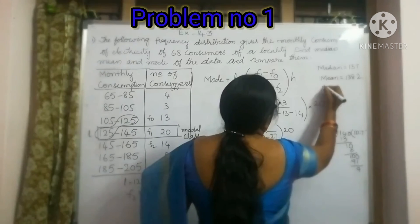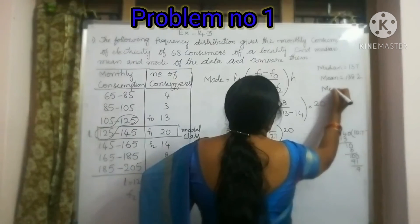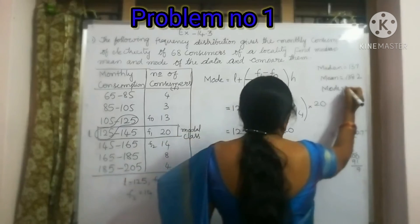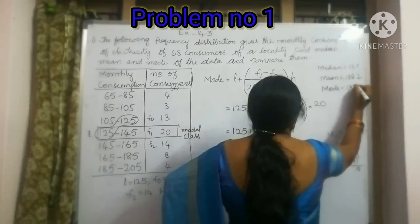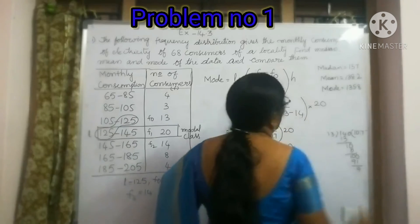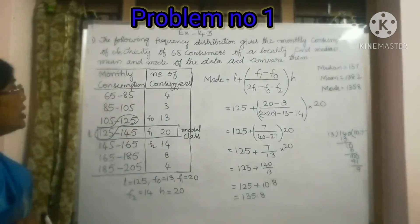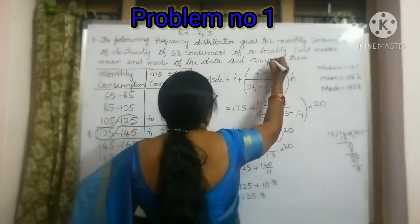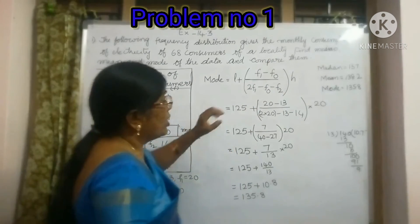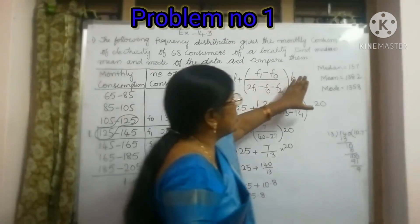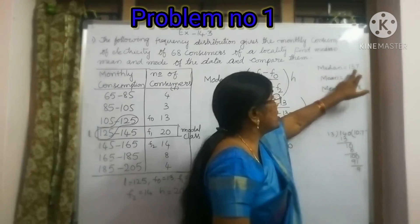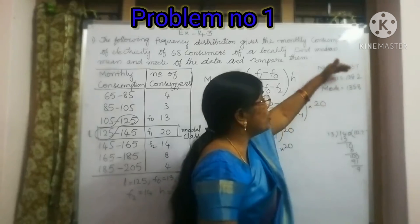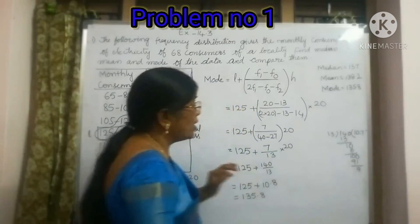If we observe this, median is 137, mean is 138.2, and mode is 135.8. The question is to find the median, mean, and mode of the data and compare them. If we see, median is 137, mean is 138, mode is 135—almost all three are the same. That is the comparison.